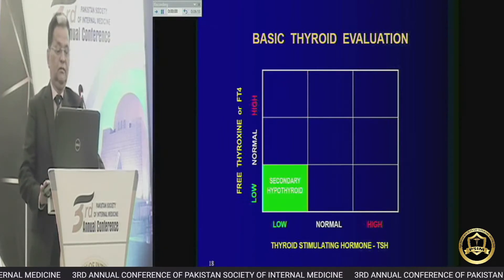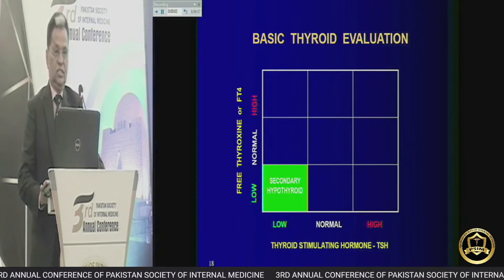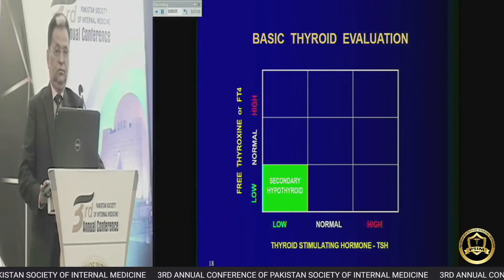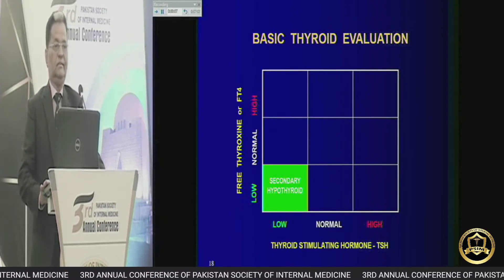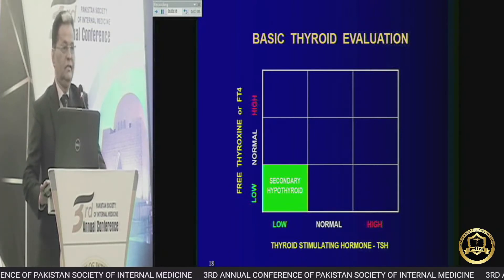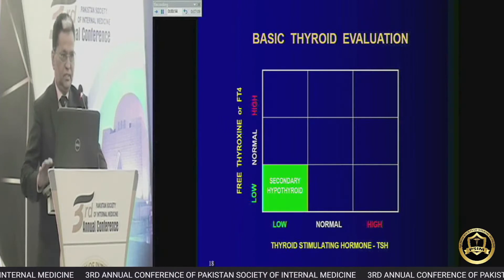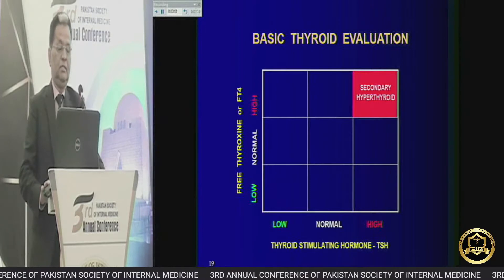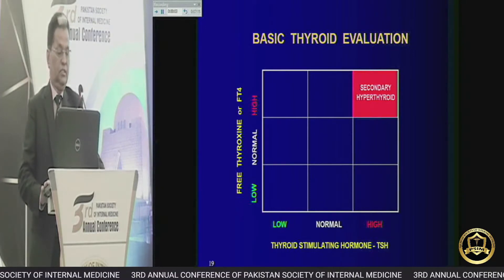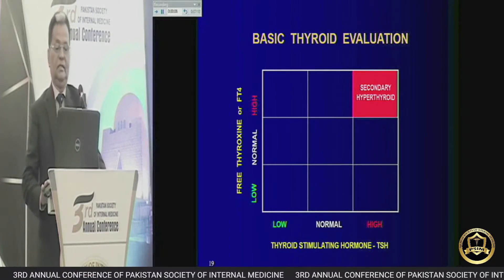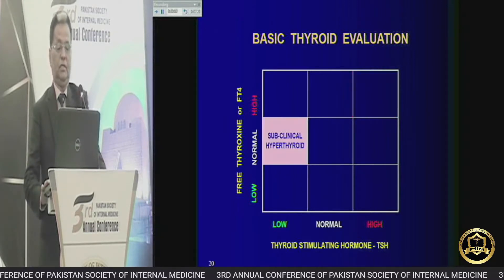If the patient has both TSH and free T4 low, then it is secondary hypothyroidism — the defect lies in the pituitary, not in the thyroid gland — because treatment differs. If both T4 and TSH are high, then it is secondary hyperthyroidism.